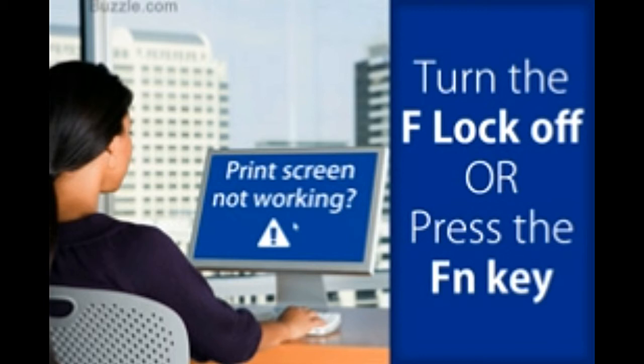Print screen doesn't work in Windows — what should you do? To get a screenshot, all you have to do is hit the PRTSCN button, and using CTRL+V, you can paste that image in any image editor to save.